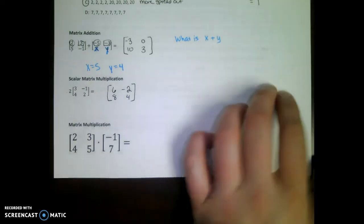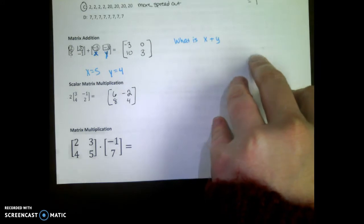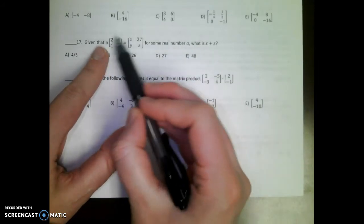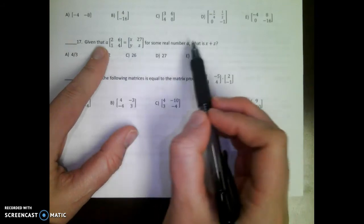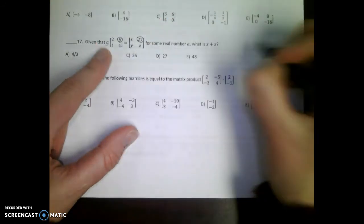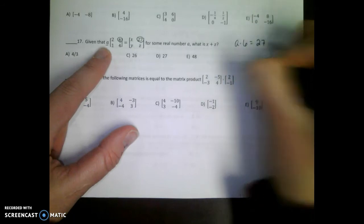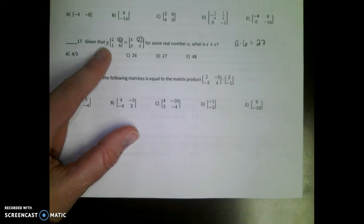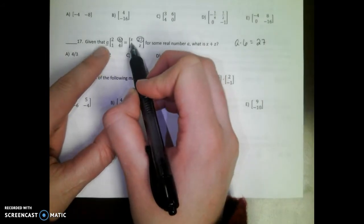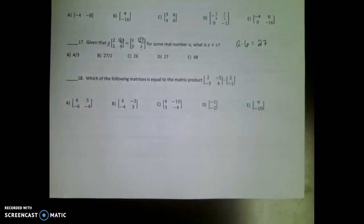Number 17, this is from an actual ACT test. Given that A times this matrix equals this other matrix, what is X plus Z? Well, find something that's done. Like use A and six and 27. A times six has to equal 27. Could you then figure out what A is? Divide by six and you'd figure out what A is. So then you would do that number times two to figure out what X is, and that number times four to figure out what Z is. And then add that X and Z value together. So if you understand scalar multiplication, this looks like a super complex problem. It's really not that bad. You can probably get the answer to this in under 30 seconds, which is really good on the ACT.